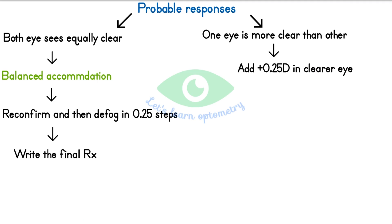In our case, it is left eye. Now again alternately occlude and ask which eye is clearer. Now we may expect 3 different responses. First response: both eyes see equally clear. Now we balanced the accommodation, slowly defog in 0.25 steps and write the final Rx.